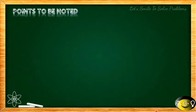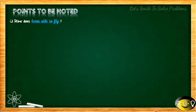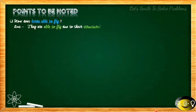The first points to be noted in this lecture: the first thing which will come to your mind for this topic is how are birds able to fly in the air or in the atmosphere. The answer is that they are able to fly due to their structural characteristics — they have specific structures which enable them to fly.